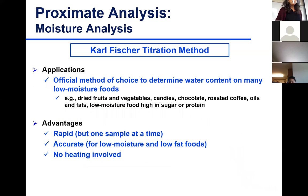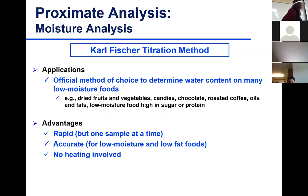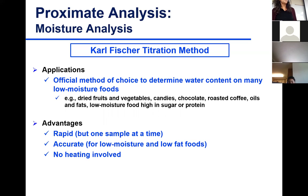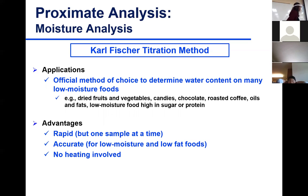The Karl Fischer titration method is an official method of analysis for many different foods. It is official for several low-moisture foods: candy, chocolate, roasted coffee, some dried fruits and vegetables, and spices. It doesn't mean you can't use it for high-moisture foods — you can get accurate measurements on a cheese sample, for example, though it may take a little longer to titrate.